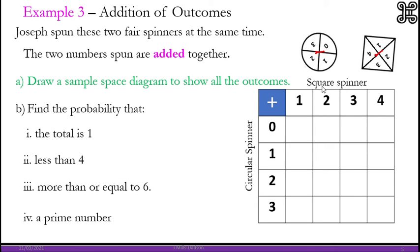Let's first see how to draw the sample space before we answer these questions. So we have the square spinner on this side. We have the circular spinner on this side. Then here we put a plus.